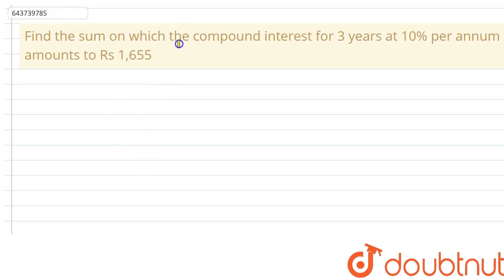The sum on which the compound interest for three years at 10% per annum amounts to Rs 1,655. The compound interest is given in this question, and the principal P we have to find out. Time is three years and the rate of interest R is 10% per annum.